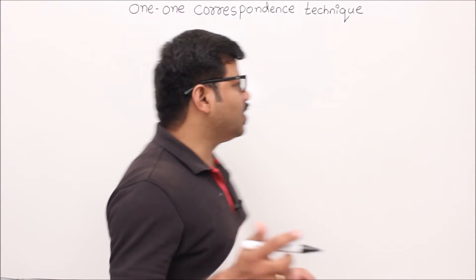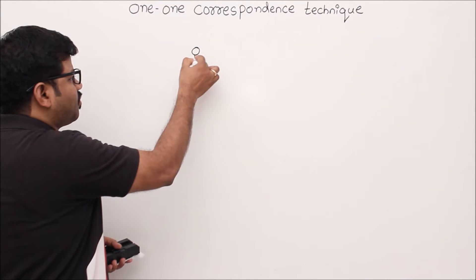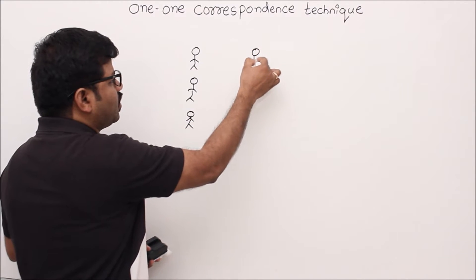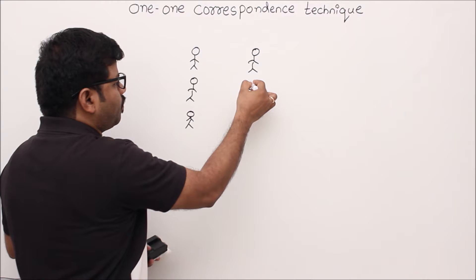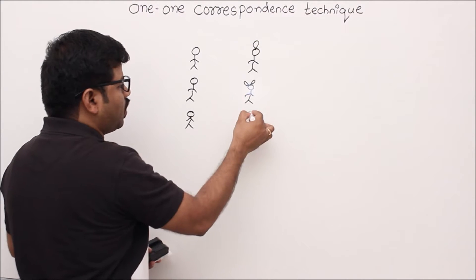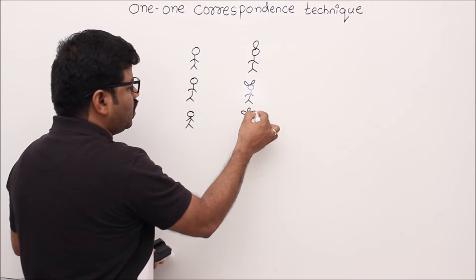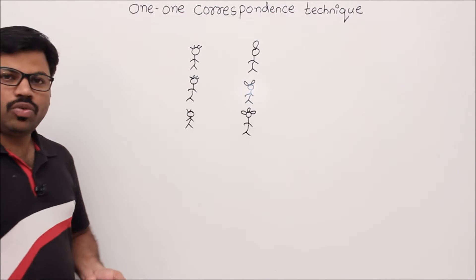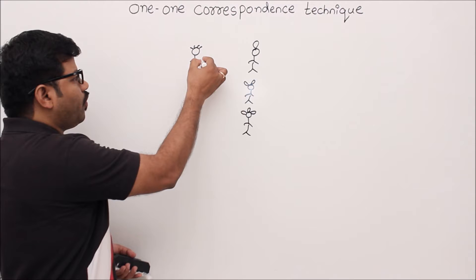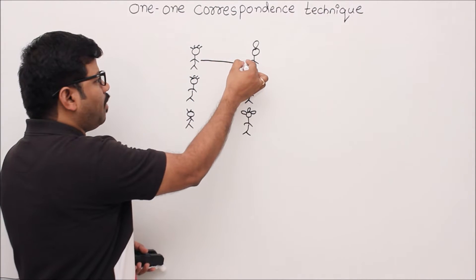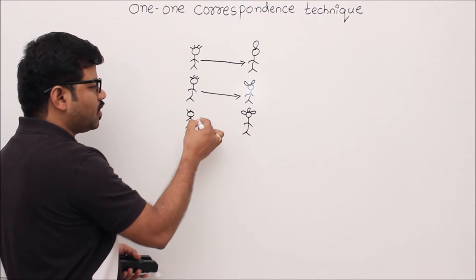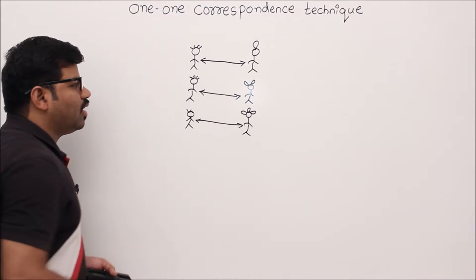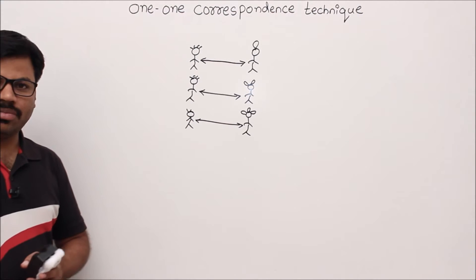So what is one-to-one correspondence? Let's say you have two sets — a set of boys and a set of girls. If every boy can be mapped to some girl, and every girl is also mapped to exactly one boy, then we say there is a one-to-one correspondence between these two sets.